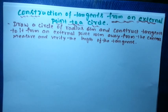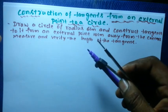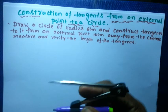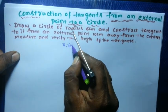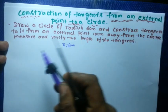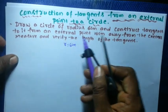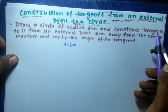The construction of tangent from an external point to a circle. Here the problem is: draw a circle of radius 6 centimeters — the given radius r is equal to 6 centimeters — and construct a tangent to it from an external point 10 centimeters away from the center.